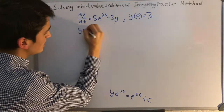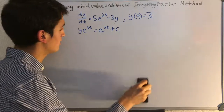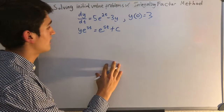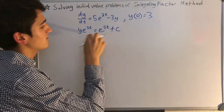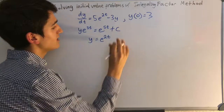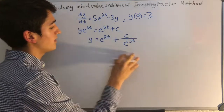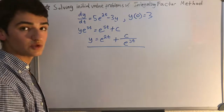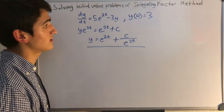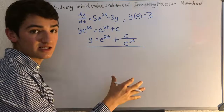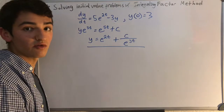So we have y times e to the 3t equals e to the 5t plus our constant. Now we're just going to solve for y by dividing both sides by e to the 3t. So e to the 5t divided by e to the 3t is just e to the 2t, and it's plus c over e to the 3t. This is what we call our general equation — we've solved for y and we're done getting the general solution. But we still have a constant, and since we have an initial value, we're going to go ahead and solve for it.